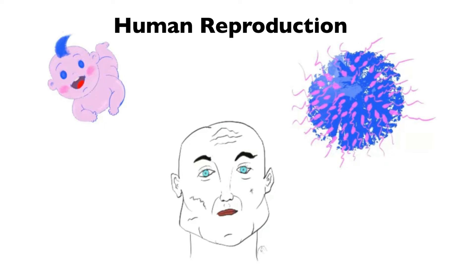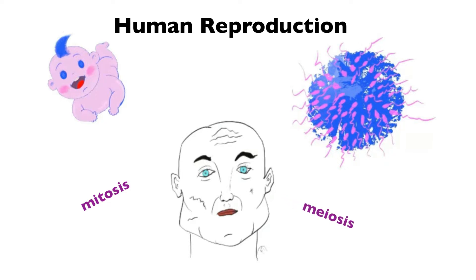Before we start talking about reproductive anatomy, it's going to be necessary to cover a little bit of cell biology. It's going to be very brief and simplified, but that's going to be enough for us to understand two basic concepts within the realm of cell division: mitosis, which is cell division of somatic cells, and meiosis, which is cell division that ends up producing gametes.